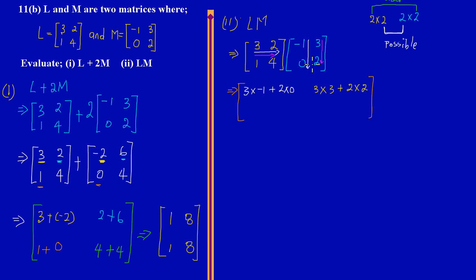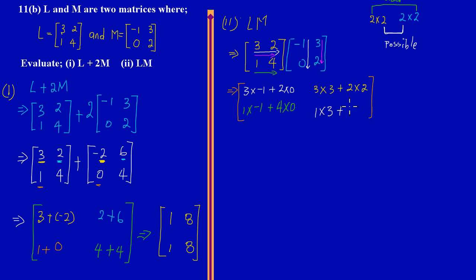Now I repeat the process with the bottom row. Using the bottom row — 1 and 4 — on the first column: 1 times negative 1, plus 4 times 0. Then the same bottom row on the second column: 1 times 3, plus 4 times 2.